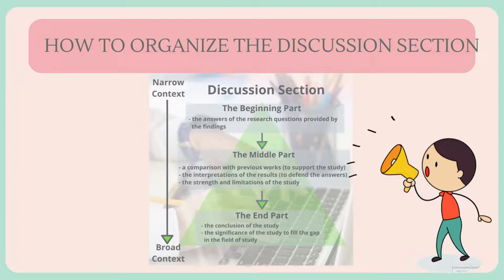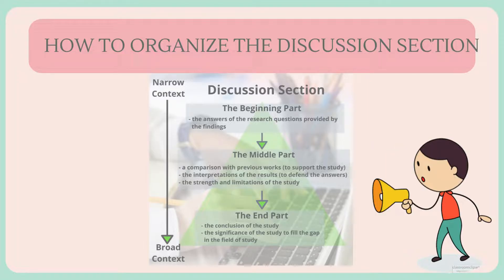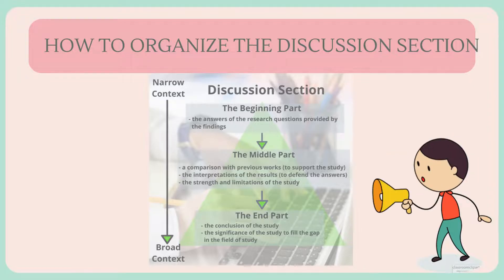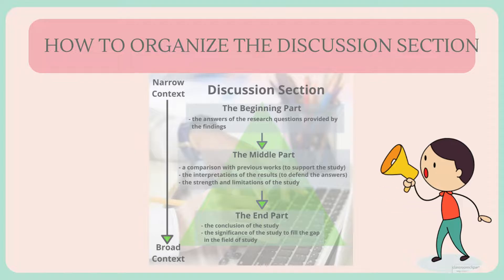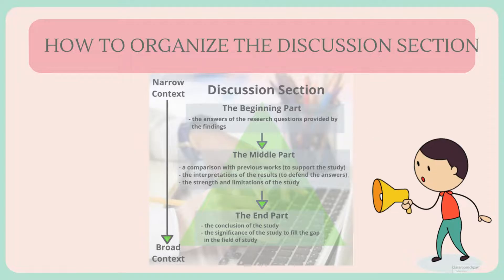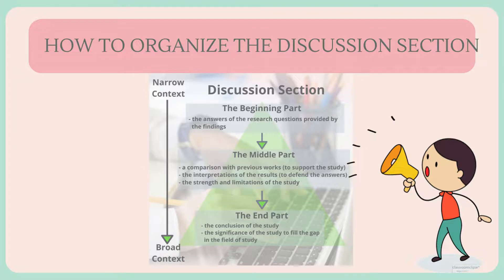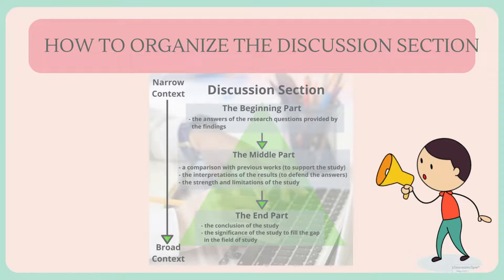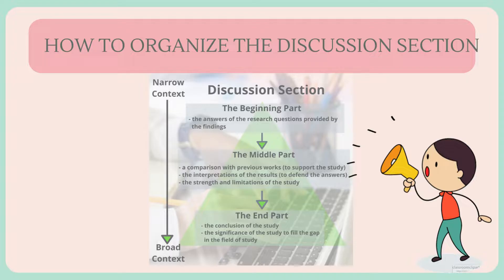The structure of the discussion section may be different from one paper to another, but it commonly has a beginning, middle, and end. Present the contents of your section from a narrow context to a broader context. One way to organize the discussion section is by dividing it into three parts. The beginning: the first sentence of the first paragraph should state the importance and the new findings of your research, and the first paragraph may also include answers to your research questions mentioned in your introduction. The middle should contain the interpretations of the result to defend your answers, the strength of the study, the limitations of the study, and an updated literature review that validates your findings.